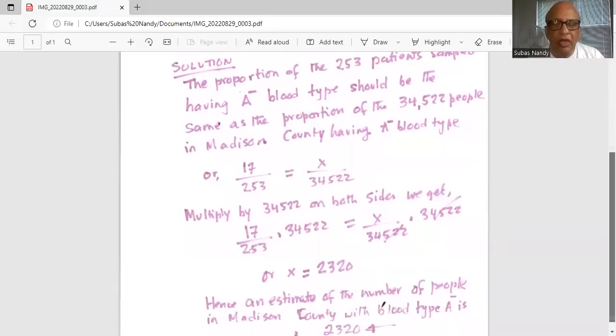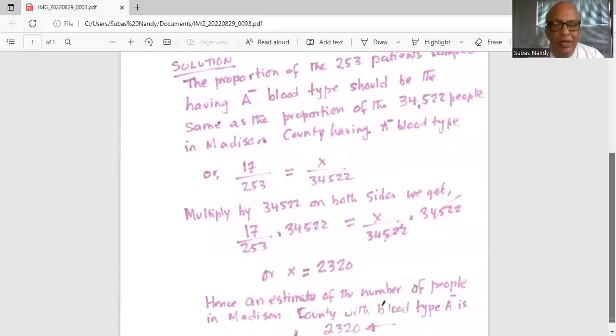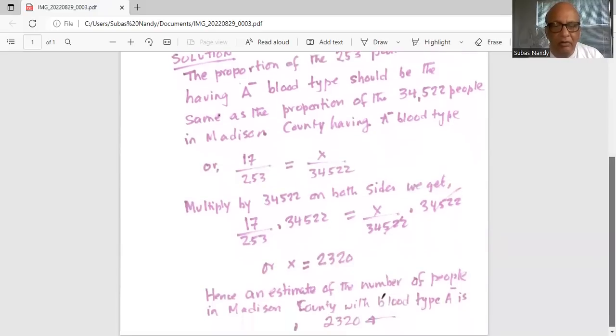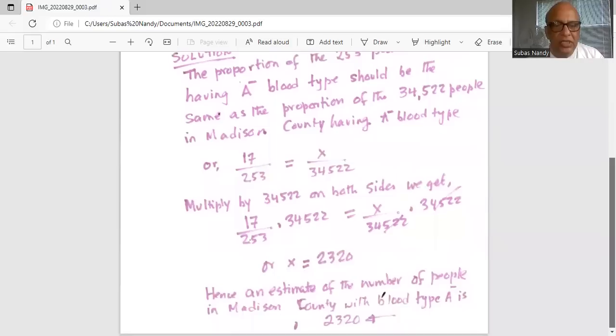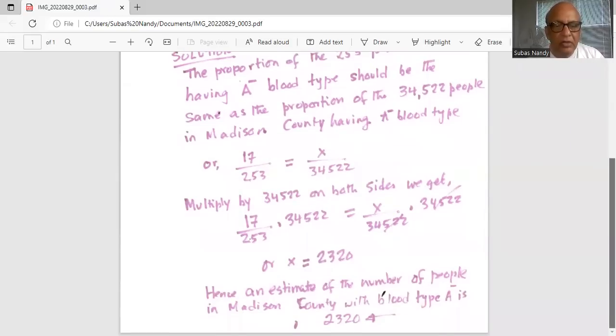So 34,522 in the numerator and in the denominator on the right hand side cancel. So X is 17 times 34,522 divided by 253 or X is equal to 2,320.